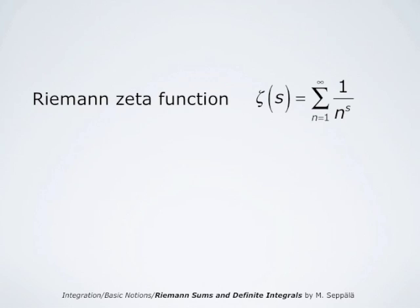Riemann studied number theory. In his number theoretical studies, he applied the function ζ(s), which is defined as summation n from 1 to infinity of 1 divided by n to the power s, where s is allowed to be a complex number. Riemann did not invent this function, but he used it so skillfully that others have later named it the Riemann zeta function. The most outstanding mathematical open problem is about the distribution of zeros of this Riemann zeta function.